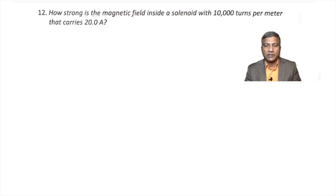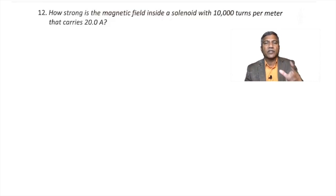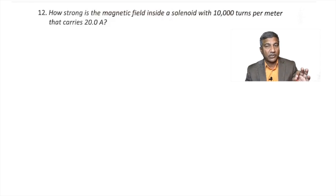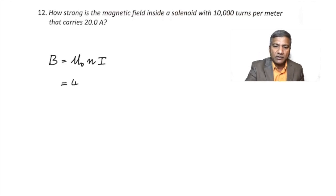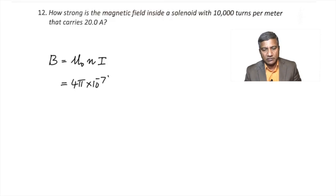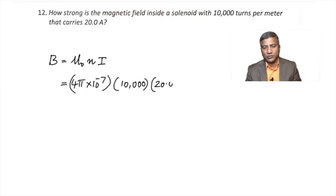Question 12: How strong is the magnetic field inside a solenoid with 10,000 turns per meter carrying 20 amperes? Using B = μ₀nI directly, since 10,000 is already given per meter: B = 4π × 10⁻⁷ × 10,000 × 20 = 0.251 Tesla on the axis of the solenoid.